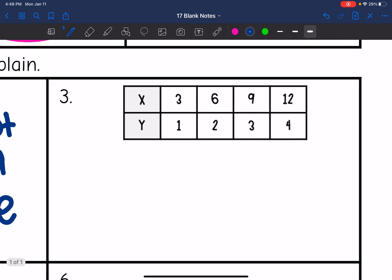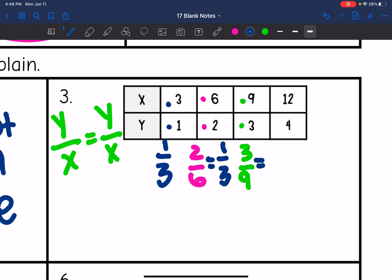Number three. I have a table and y over x needs to equal y over x if it is proportional. It has to have that constant ratio. So 1 divided by 3 would be this first 1 divided by x. That won't simplify any further. Then I have 2 divided by 6, which simplifies to 1 over 3. The next one is 3 over 9. Those are both divisible by 3, so it also equals 1 over 3.